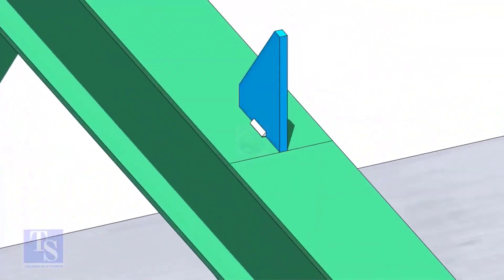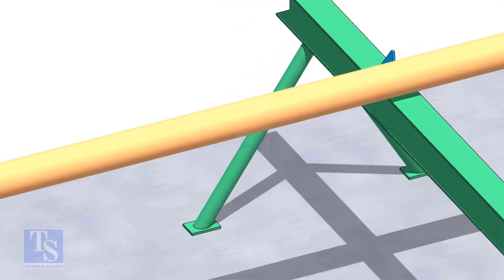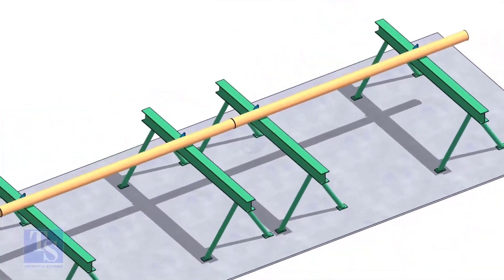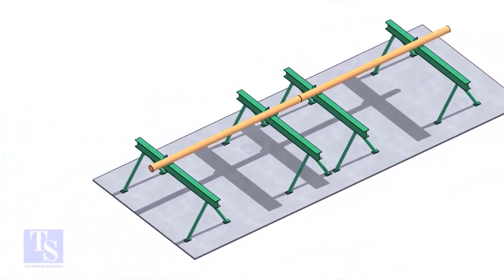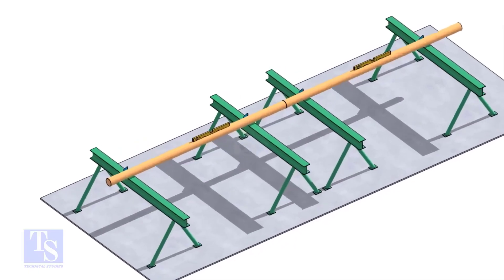Put the pipes on the stands, touching the stopper plates, as shown. The joint shall be in between the supports. Now the pipes are already straight, horizontally and vertically.